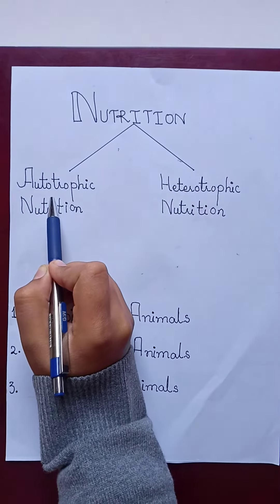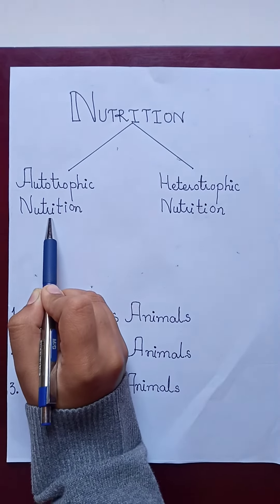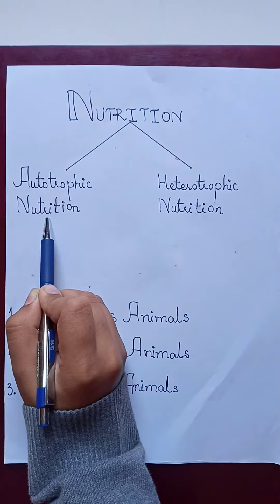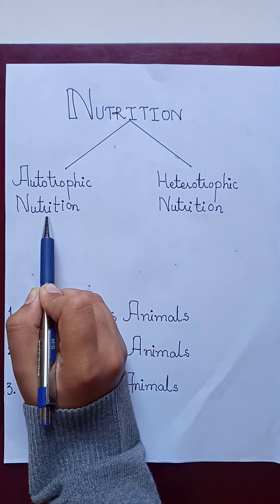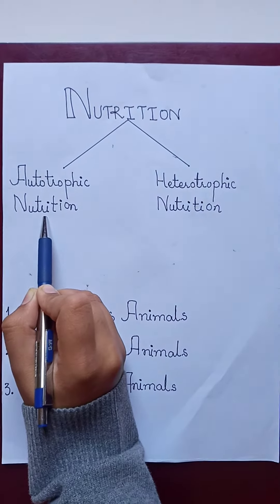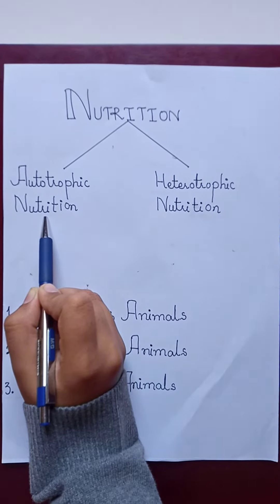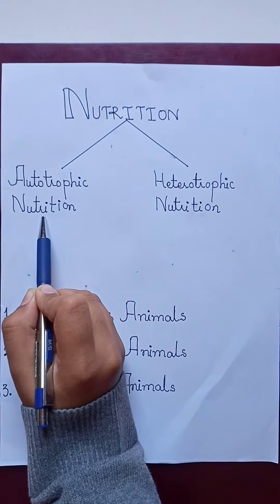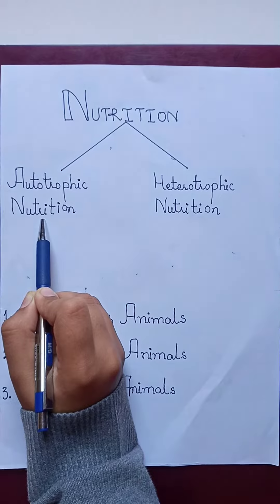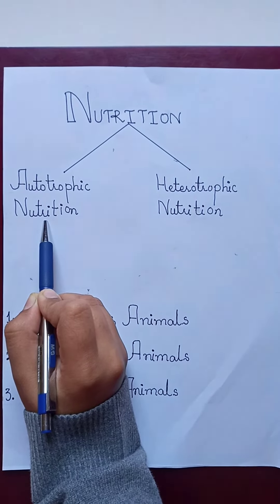Autotrophic nutrition: You know that a majority of plants are green because they possess green coloring matter called chlorophyll. This pigment is of great importance in nature as it helps plants to make their own food in the presence of sunlight using water and dissolved minerals absorbed from the soil through their roots and carbon dioxide taken from the air through their leaves.